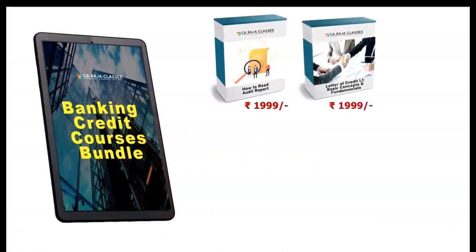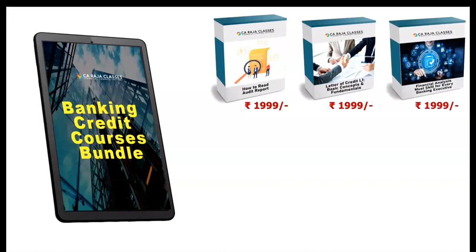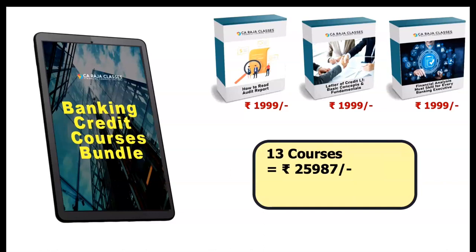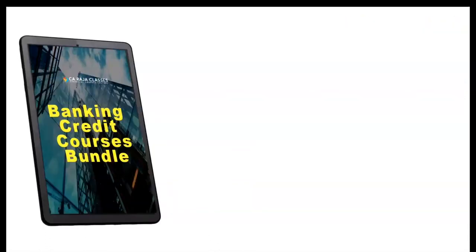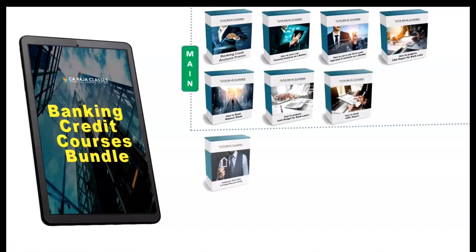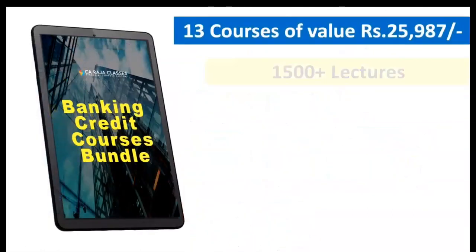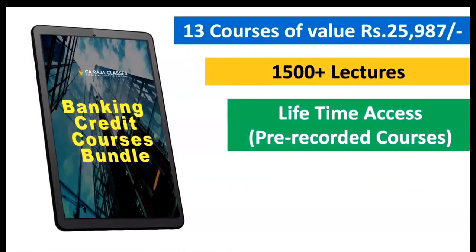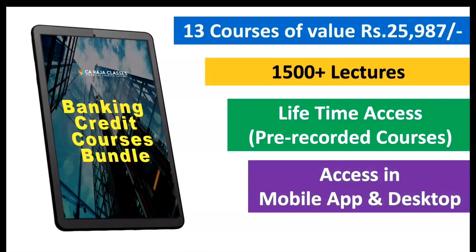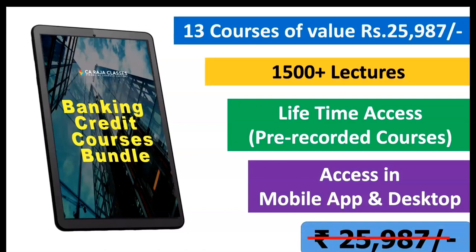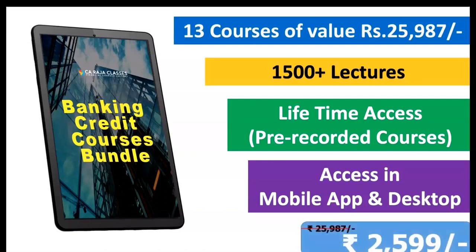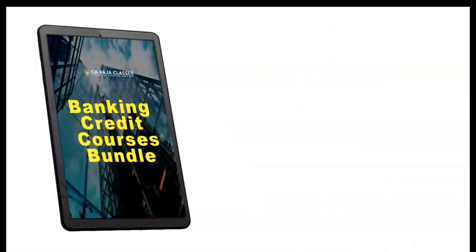And it is not yet over — some more bonus courses. Course number eight: Collateral Security — a comprehensive study. Course nine: How to Carry Out Credit Risk Rating for Non-Trading Entities. Course number ten: Banking Credit Analysis through Various Case Studies. Now it is 10 courses of value close to $20,000, but you pay only $2,599. Further bonus courses: Course 11 on how to read audit reports, Course 12 on letters of credit, and Course 13 on financial analysis in short duration. So 13 courses of value close to $26,000, with 1,500 plus lectures, lifetime access on desktop, laptop, mobile, iPhone, and iPad — all for just $2,599. This is a once-in-a-lifetime opportunity. Enroll now — I'll see you inside the course.